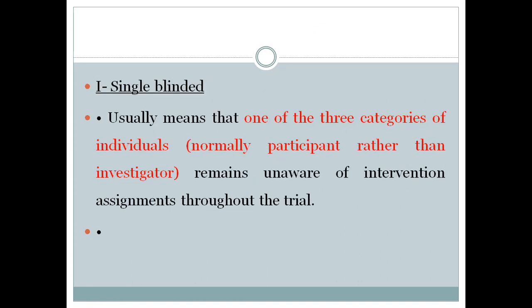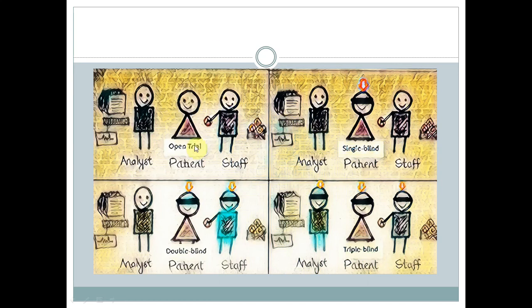We have only three types of blinding. First is the single blind study. In an open trial, the participants or patients, the healthcare providers or investigators, and the analysts who measure the outcome data — all are open to knowing the intervention. In a single blind trial, the participants don't know which drug or which type of intervention they are getting. Allocation concealment is different from blinding: allocation concealment means participants are allocated to different groups by randomization.